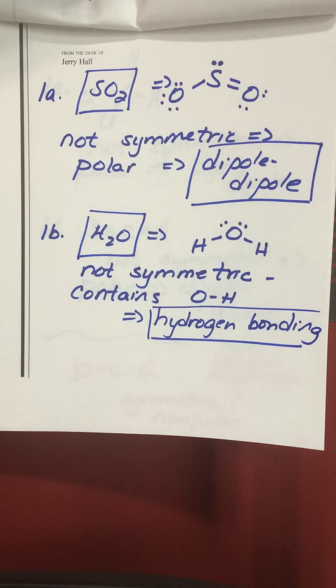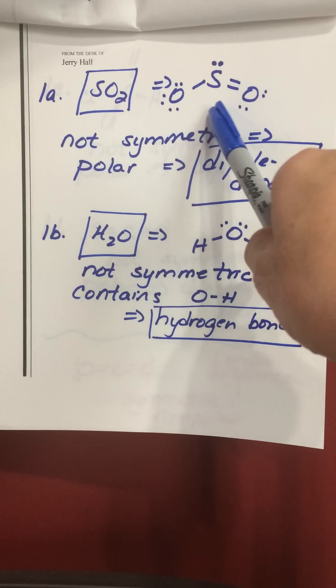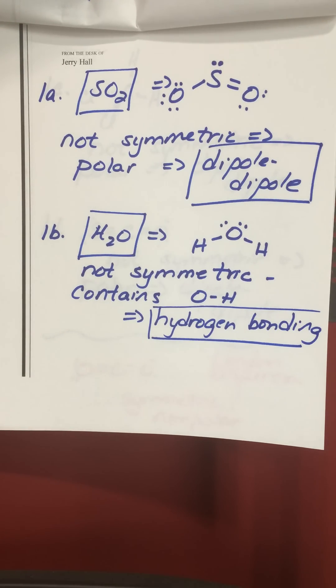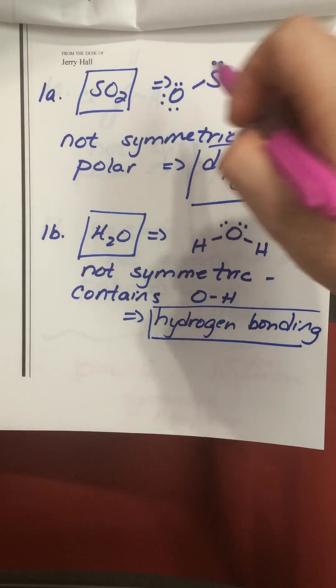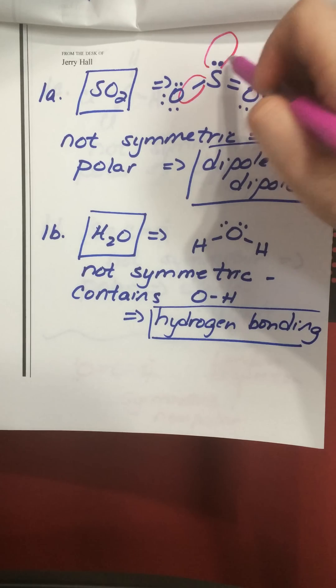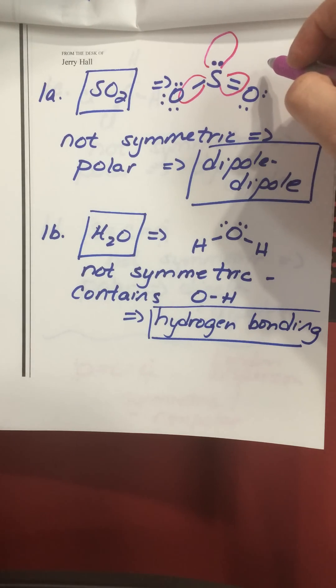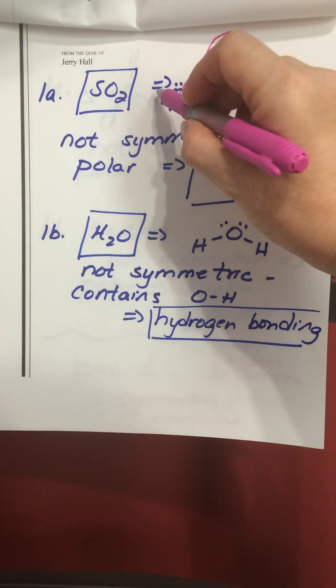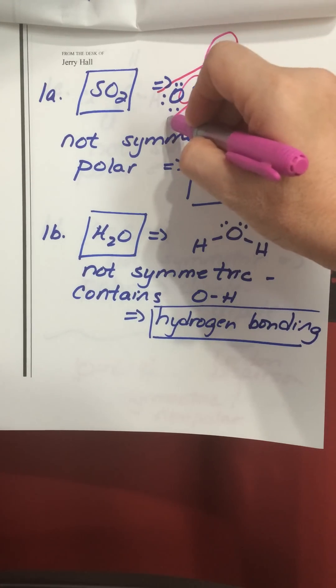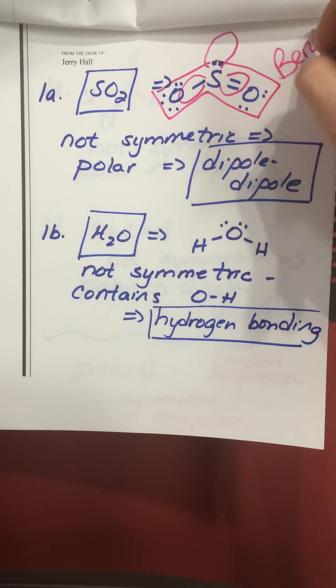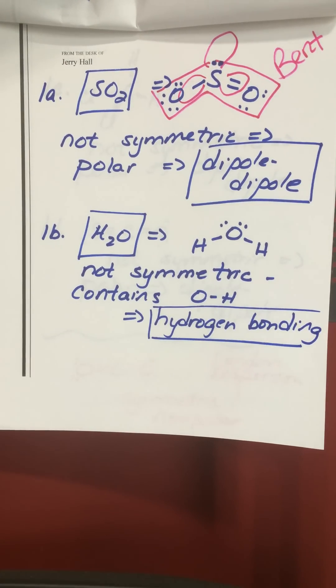If you watched my other video on drawing molecular shapes and Lewis structures, one example I did was sulfur dioxide. The Lewis structure of sulfur dioxide looks like this. You can see that it is not a symmetric shape. In this molecule sulfur has three electron domains, which gives it a trigonal planar electron domain shape. The molecular shape is bent. So it is not a symmetrical molecule. Therefore it is polar. And since it's polar with no possibility of hydrogen bonding, its main intermolecular force is dipole-dipole.